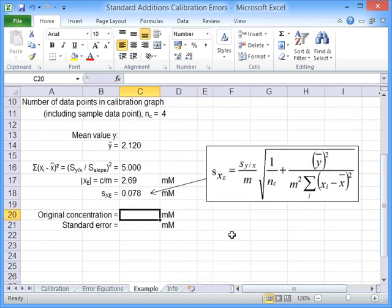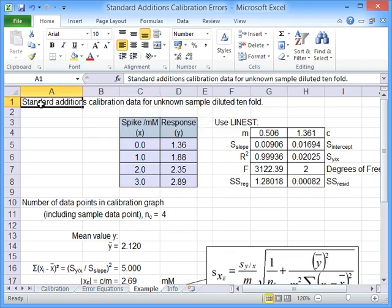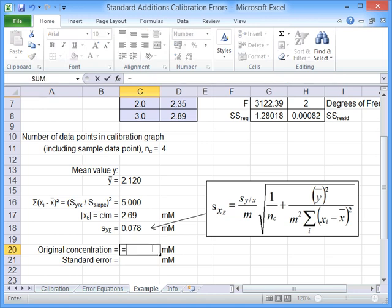Final thing is, this situation is based on a diluted sample, diluted tenfold. So to get the original concentration, we have to times this by 10, and we also have to multiply the error by 10 as well. So the original sample had 26.9 millimolar of the analyte in, and the standard error for that was 0.78 millimolar.